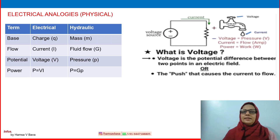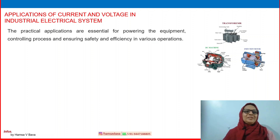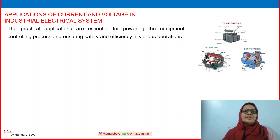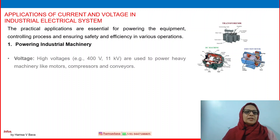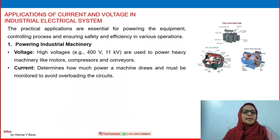Voltage is the potential difference between two points in an electric field — the push that causes current to flow. Looking at the application of current and voltage in industrial electrical systems: the practical applications are essential for powering equipment, controlling processes, and ensuring safety and efficiency. High voltages like 400 V or 11 kV are used to power heavy machinery like motors, compressors, and conveyors. Current determines how much power a machine draws and must be monitored to avoid overloading the circuit.